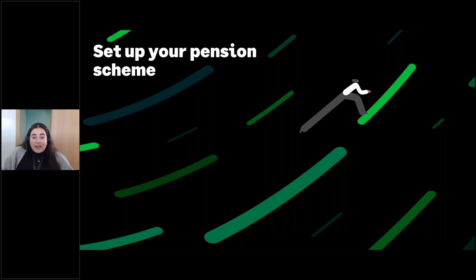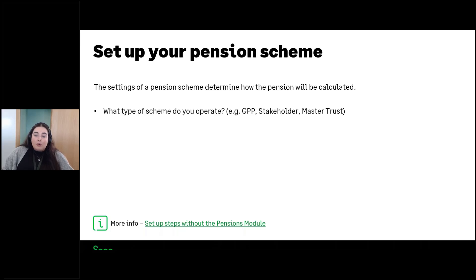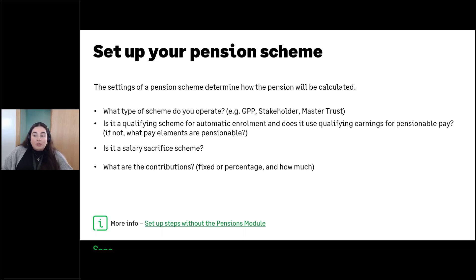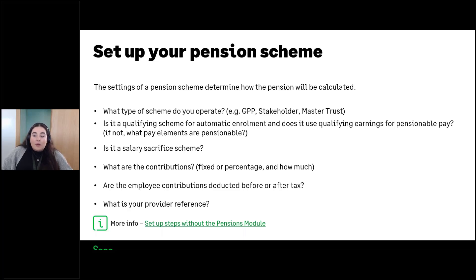In terms of setting up the pension scheme, it's nice and easy to do in payroll as long as you've got the information you need, since all of these settings determine how pension contributions are calculated. You need to know: what type of scheme do you operate — GPP, stakeholder, master trust? Is it a qualifying scheme for automatic enrollment and does it use qualifying earnings for pensionable pay? If not, what pay elements are pensionable? Is it a salary sacrifice scheme? What are the contributions — a fixed amount or a percentage? Are employee contributions deducted before or after tax? And what is your provider reference?